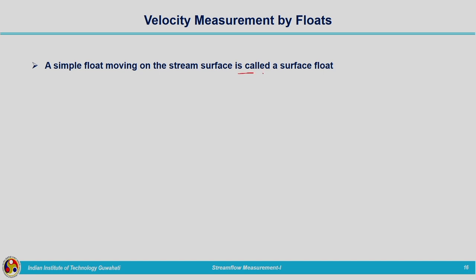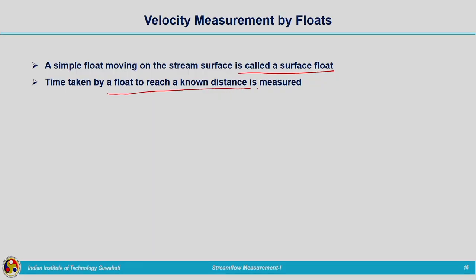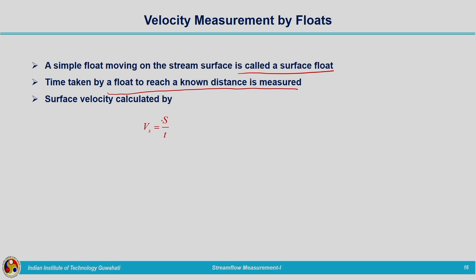Velocity can also be measured by means of floats. A simple float moving on the stream surface is called a surface float. The time taken by the float to travel a known distance between two fixed points is measured. Velocity Vs = S / T, where S is the distance travelled and T is the time interval taken by the float to travel that distance.